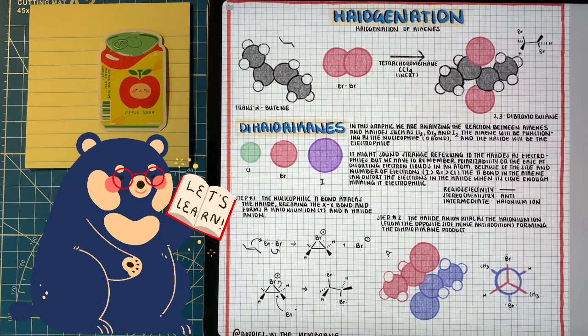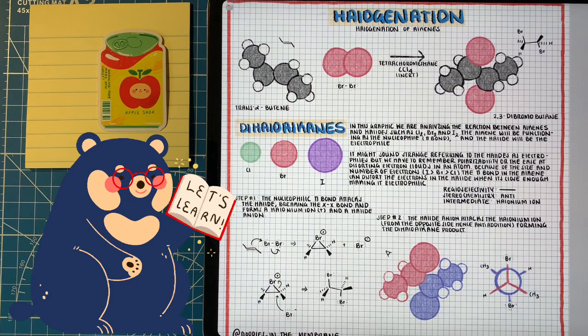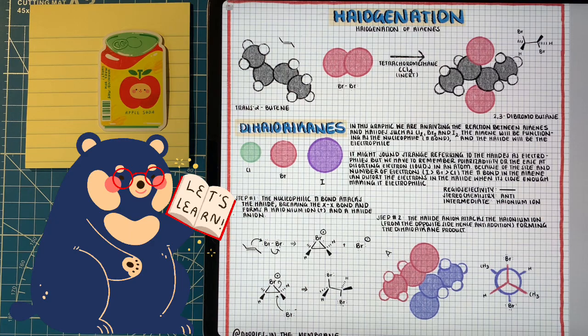Looking at the Newman projection of the product of this reaction, the dihalo alkane, we can actually see how the two halides attached to what was once the double bond carbons are in anti-conformations. They're in opposite spatial arrangements of one another. This is what we call anti-addition.